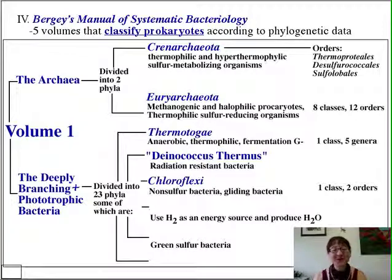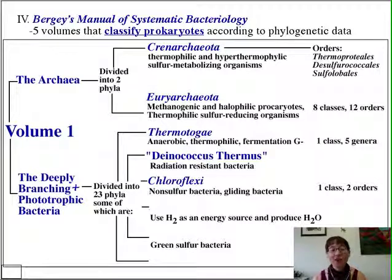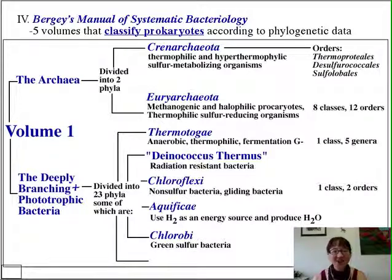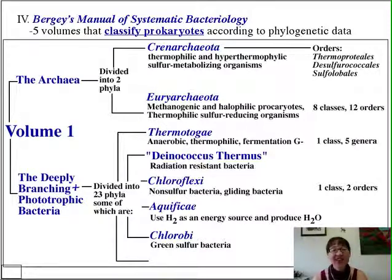The Chloroflexi are non-sulfur bacteria — the green non-sulfur bacteria are a big part of the microbial normal flora in the lower geyser basin of Yellowstone National Park. We'll also look at the Chlorobi, as well as the Aquificae. Aquifex, one of the most representative members, literally means 'water maker.' These bacteria utilize hydrogen gas as their energy source, and as they oxidize that hydrogen gas, they actually make water — there's obvious industrial interest in that.